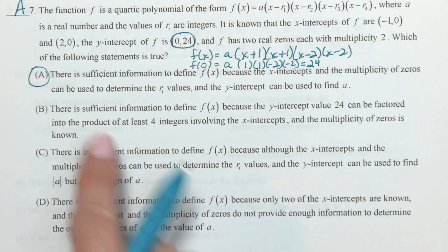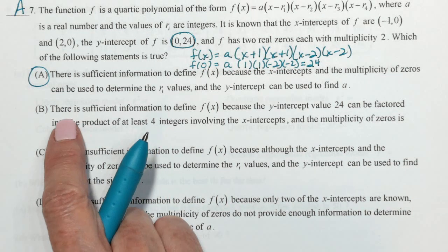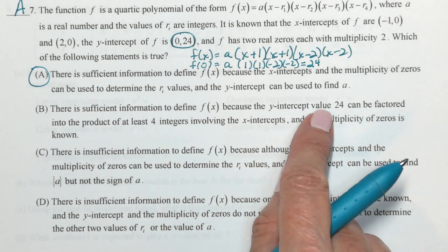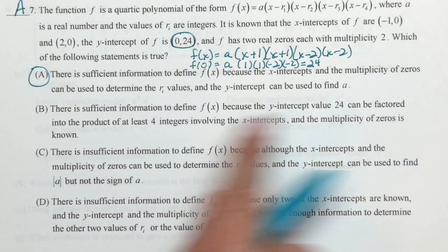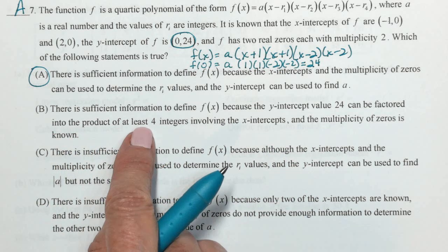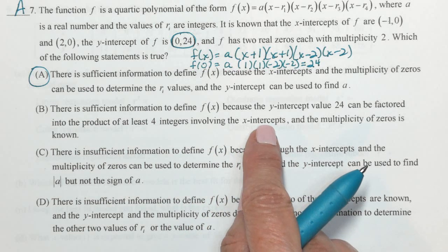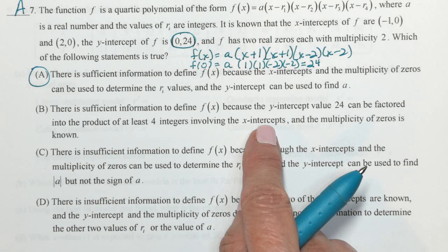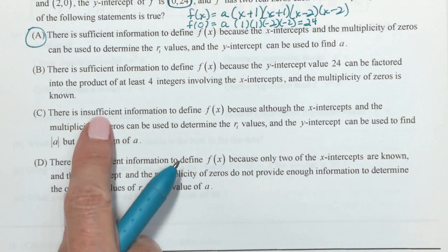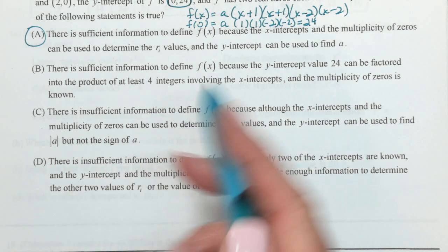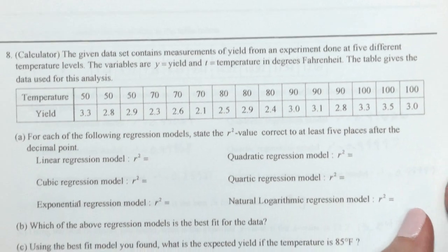My answer here is a. I already know that. So let me just continue reading this just to be thorough. There is sufficient information to define f, because the y-intercept value 24 can be factored into the product of at least four integers involving the x-intercepts. That has nothing to do with being able to define f, so no. And then the last two are that there is insufficient information, and I know that that's not true, because we just found f.